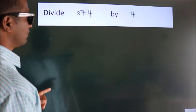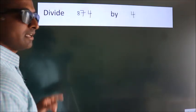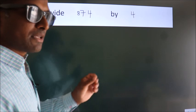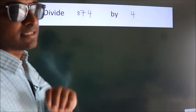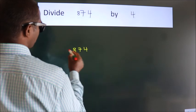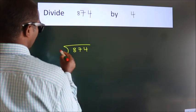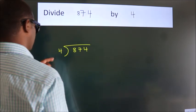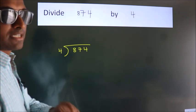Divide 874 by 4. To do this division, we should frame it in this way: 874 here, 4 here. This is your step 1.